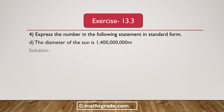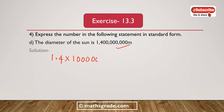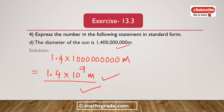Now solve question number 4, part D. The diameter of the Sun is 1,400,000,000 meters. So if we place the decimal point after 1, it will be 1.4 multiplied with 10 to the power 9 meters. So the diameter of the Sun is 1.4 × 10⁹ meters. This number is in standard form.